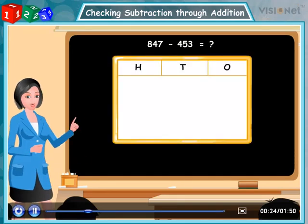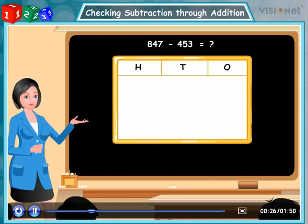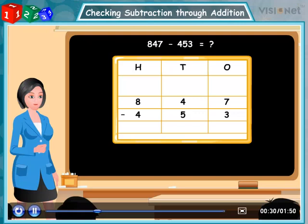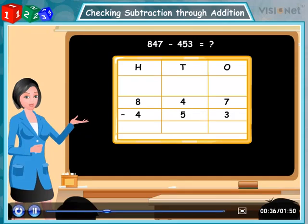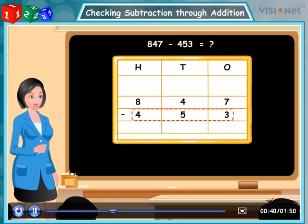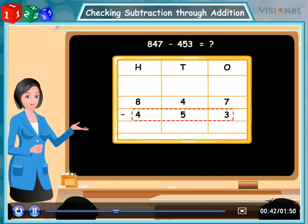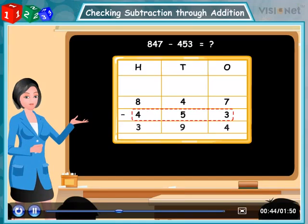First perform the subtraction. For this, arrange the numbers according to their place value and subtract column wise. Like this. The result we get is 847 minus 453 is equal to 394.